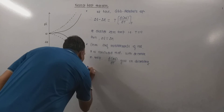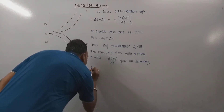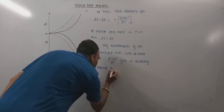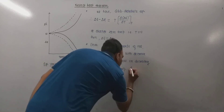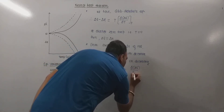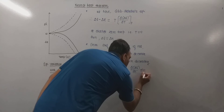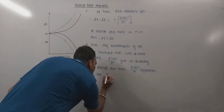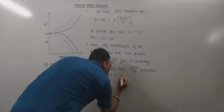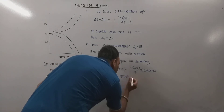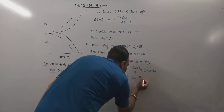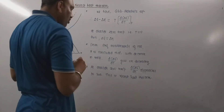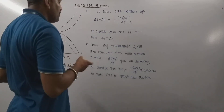This is the Nernst Heat Theorem: at absolute zero temperature, d(ΔG)/dT approaches zero. This is the Nernst Heat Theorem.